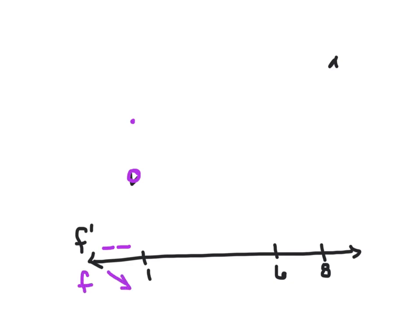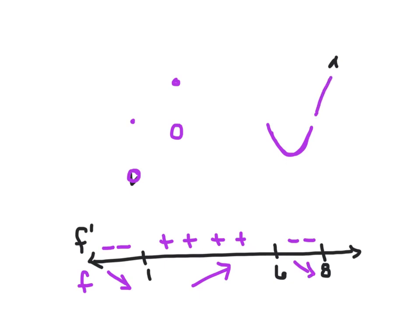You can pick any number between 1 and 6 — let's say x equals 2. When x equals 2, the value of f' is clearly above the x-axis, so it's positive. That's true for all values between 1 and 6, so f is increasing. Between 6 and 8, f' is below the x-axis — all values are negative — therefore f is decreasing. Everything past 8 is above the x-axis, therefore f is increasing.